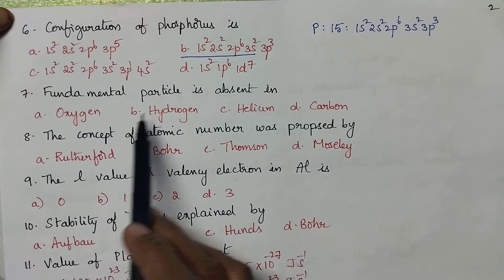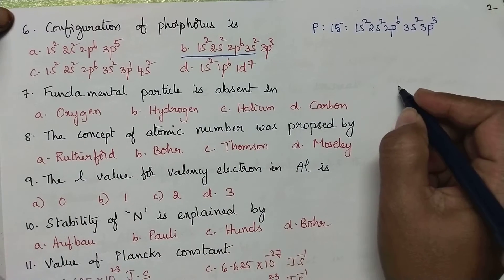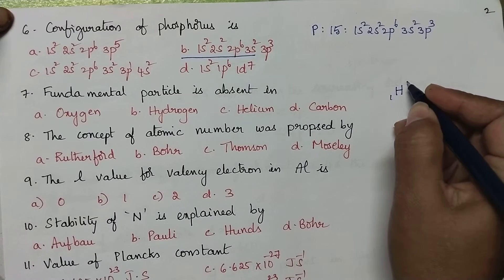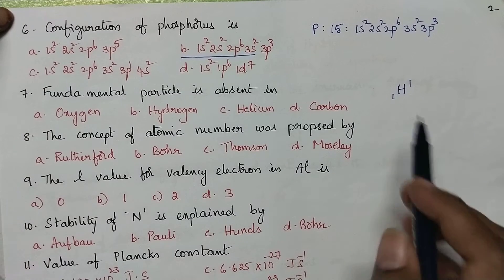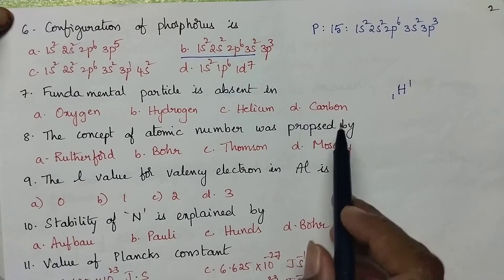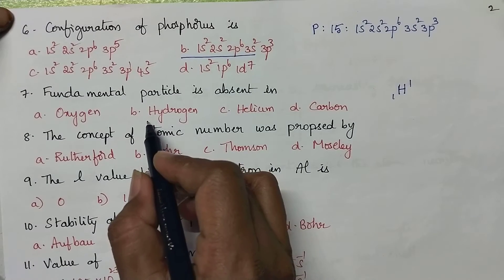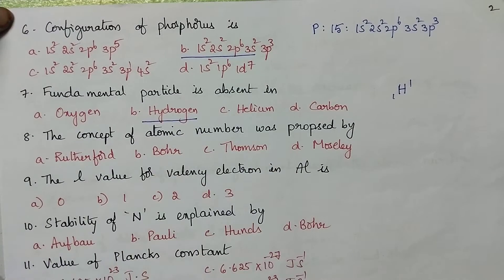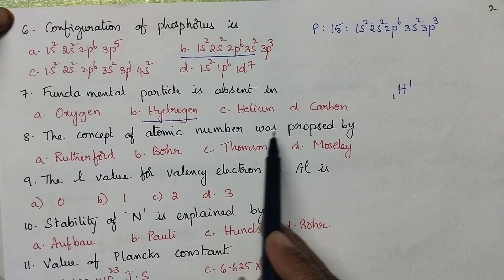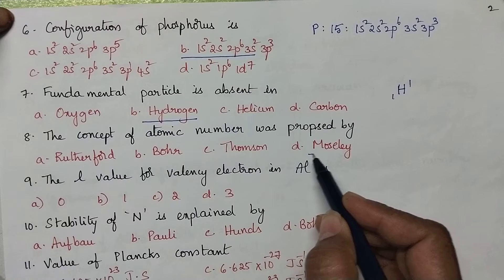Fundamental particle is absent in: Hydrogen is represented as H11. So, it contains only one proton and one electron, so neutron is absent in hydrogen. The concept of atomic number was proposed by Mosley.